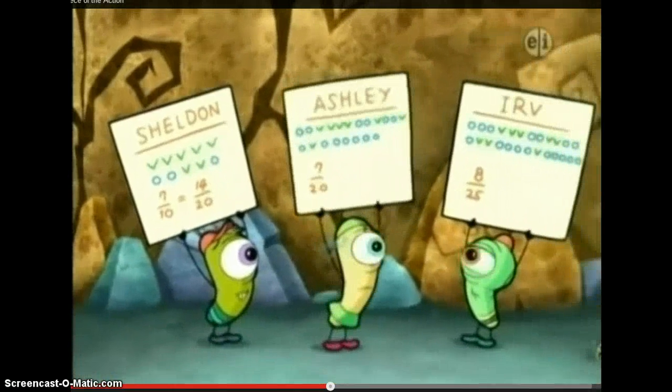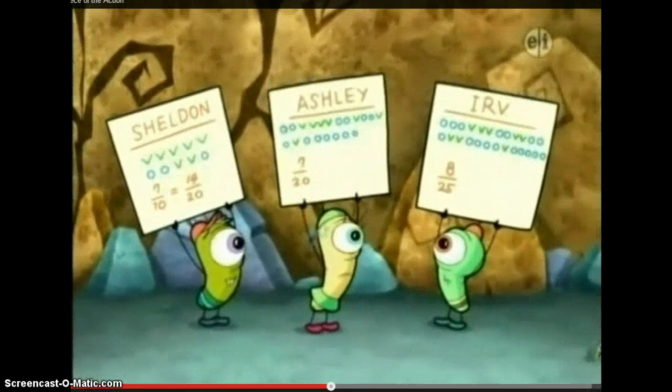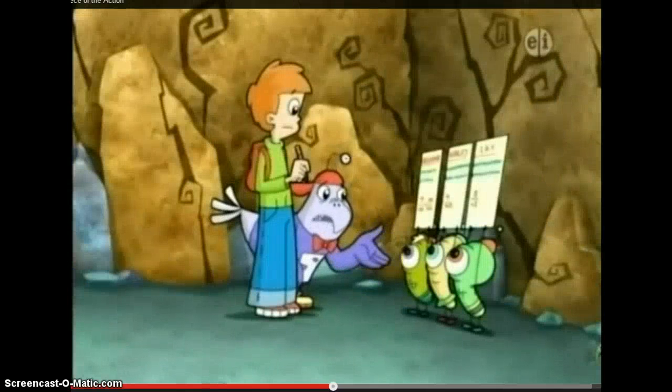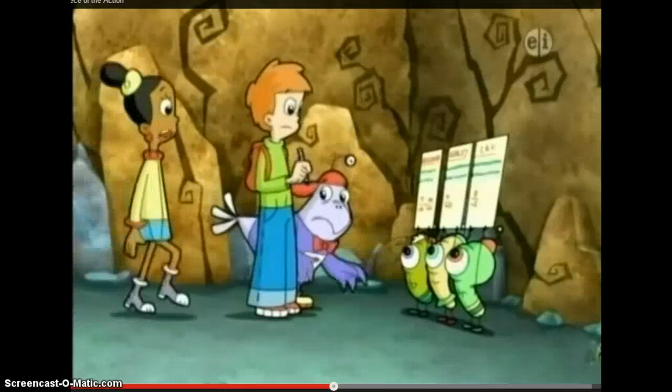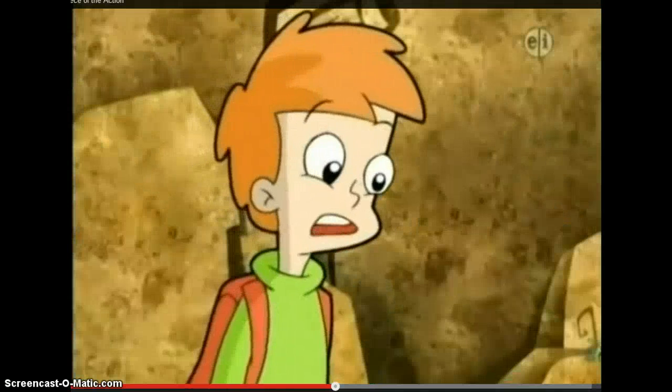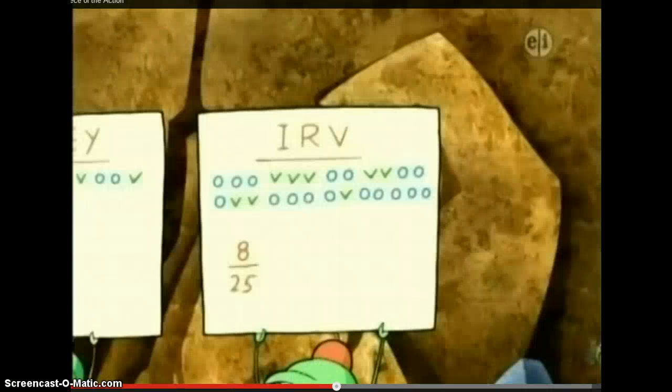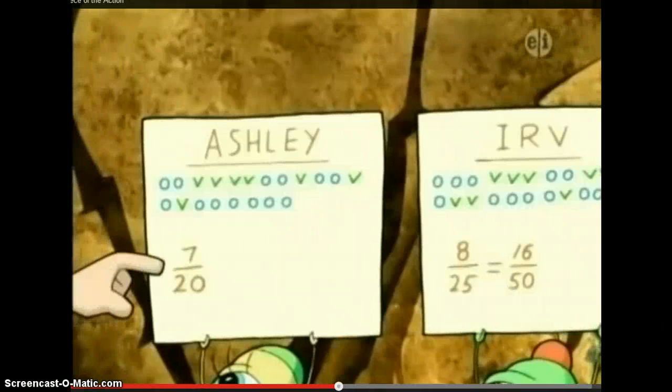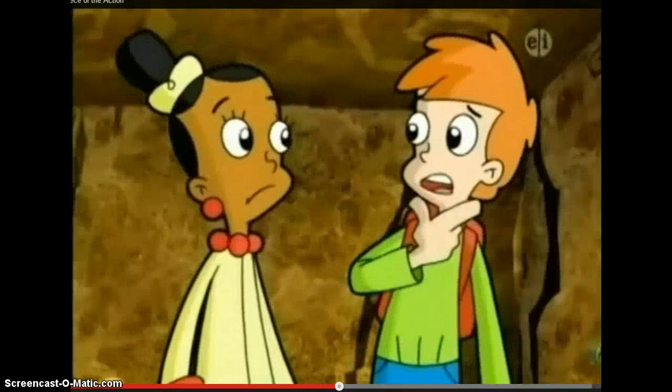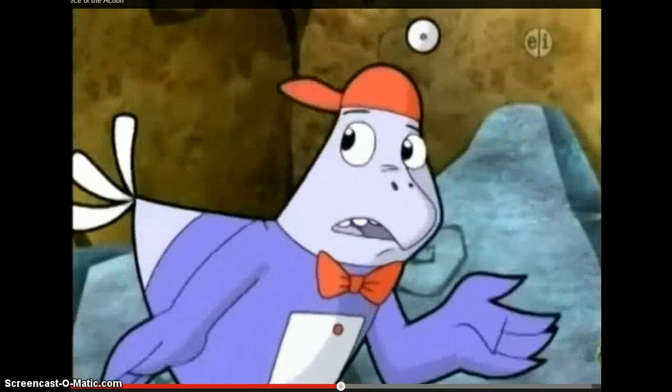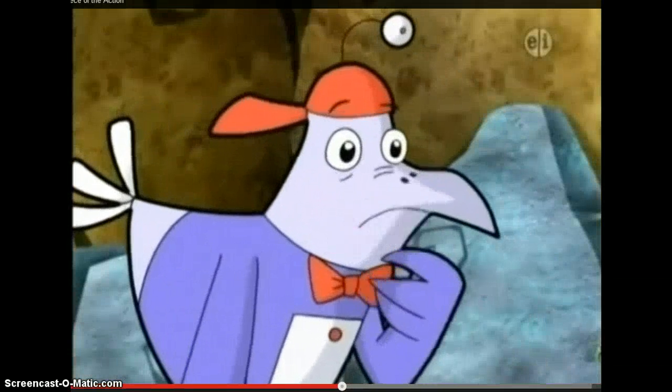Okay. Now I can compare Sheldon and Ashley. But what about poor Irv? He jumped twenty-five times. Don't we need a denominator that will let us compare his score, too? Yeah! We need a denominator that works for all the scores. Well, how about fifty? There are two groups of twenty-five and fifty. And... Rats! It won't work for twenty. Two twenties are forty, not fifty.